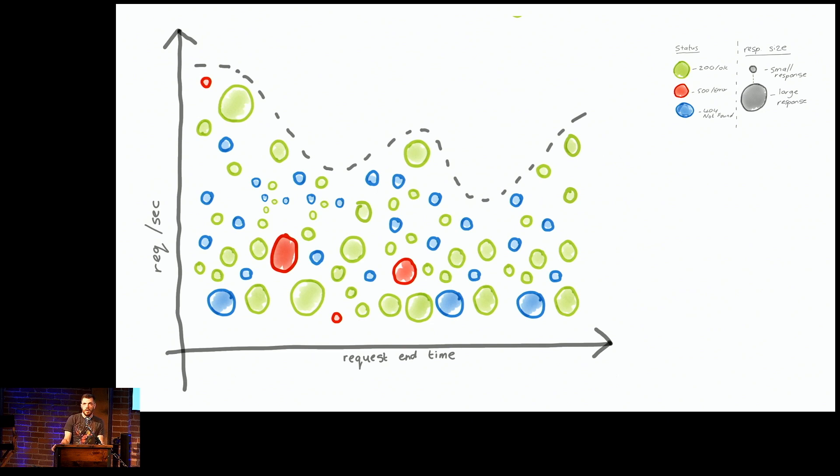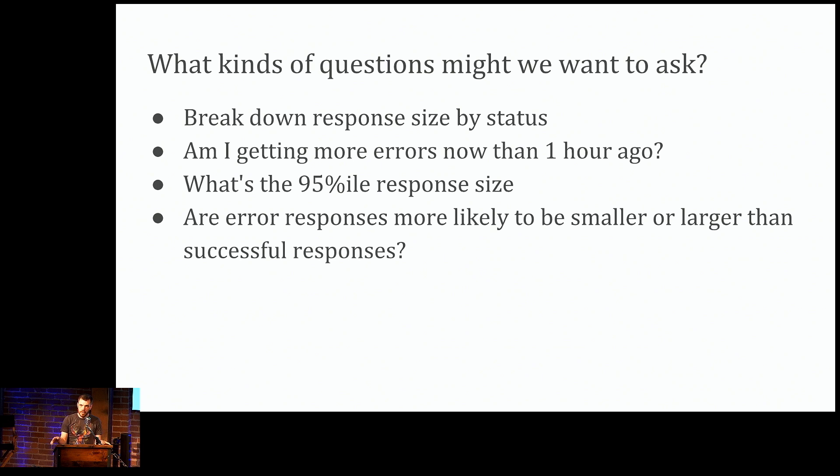And I found this easiest to understand through an example. Let's say we have a table where we're keeping an entry for every web request. And we have attributes like the request size, the response size, the response time, and the status code. A visual representation of what this looks like with one row per request might be something like this. So here, each little bubble represents a row from our table. The size of the bubble is the response size, or corresponds to the response size, and the status, whether it's a success or an error, is represented by the color. The reds are errors, the greens are successes, and the blues are like 404s or something else.